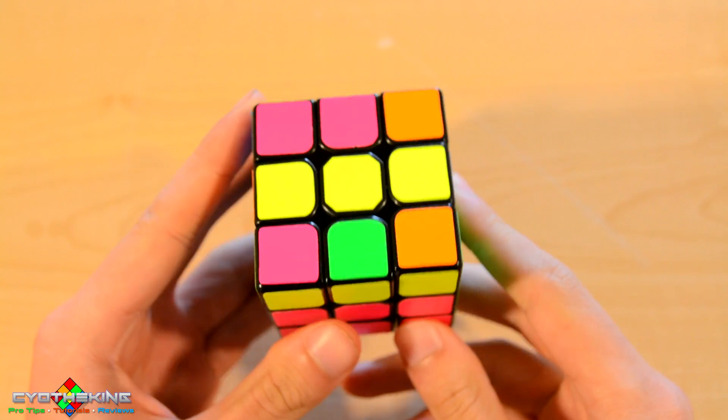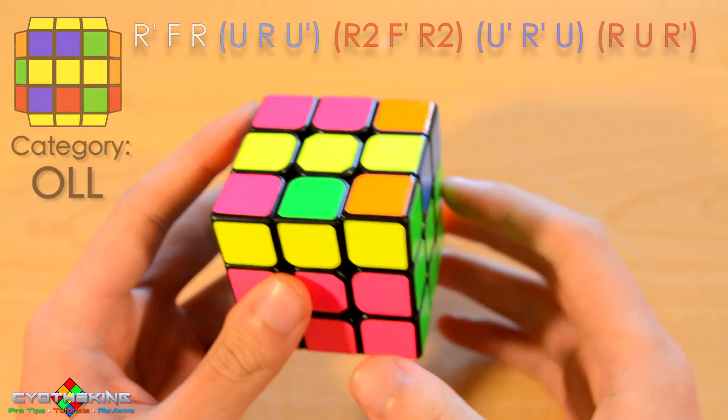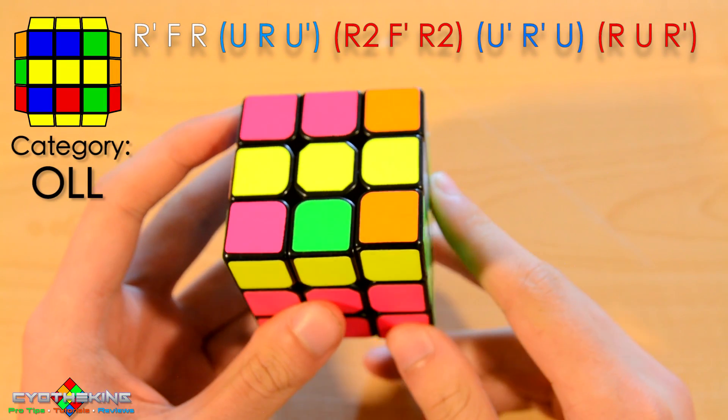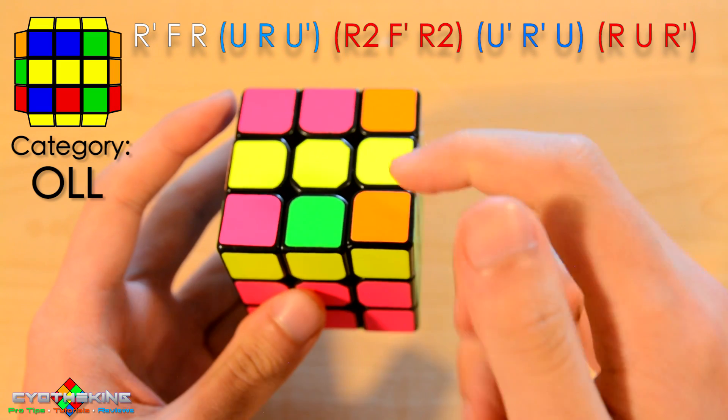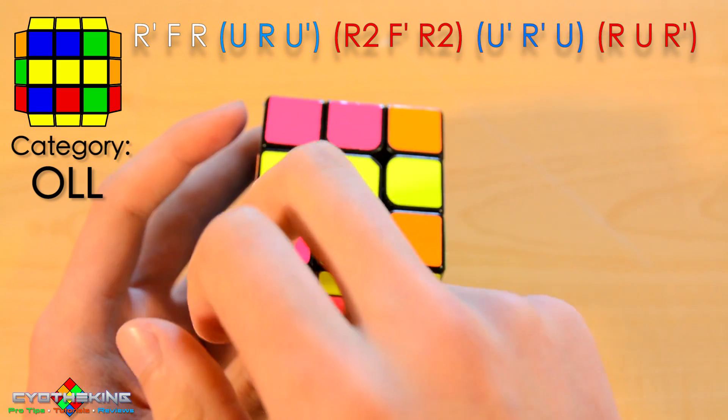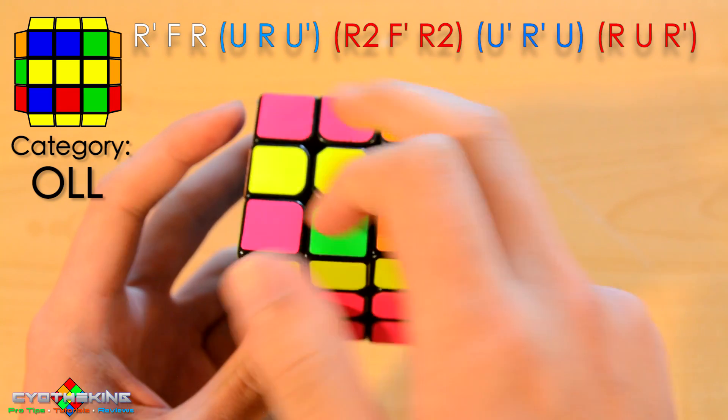Hey guys, for this week's algorithm of the week we actually have two algorithms. It's this OLL and I have two OLL CP cases for it. For this CP case it's just two same corners going up right here and they're opposite of each other.